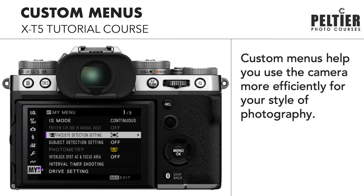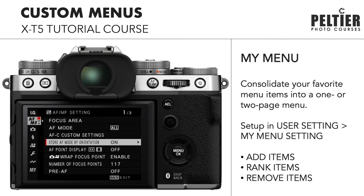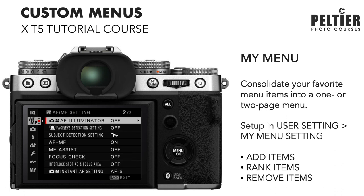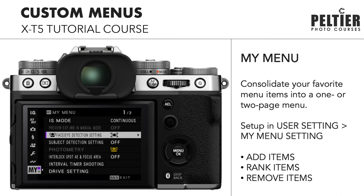There are two custom menus that you can create, and we're going to start by looking at My Menu. My Menu is a consolidation of all of your most used menu options into one menu page — or two menu pages if you have a lot of options. So if you're constantly changing the same several settings across the image quality, focus, and shooting menus, instead of scrolling through those big lists trying to find those settings in the sea of other settings, you can have your favorites all right there in one menu. It really makes navigating the menus much more convenient.